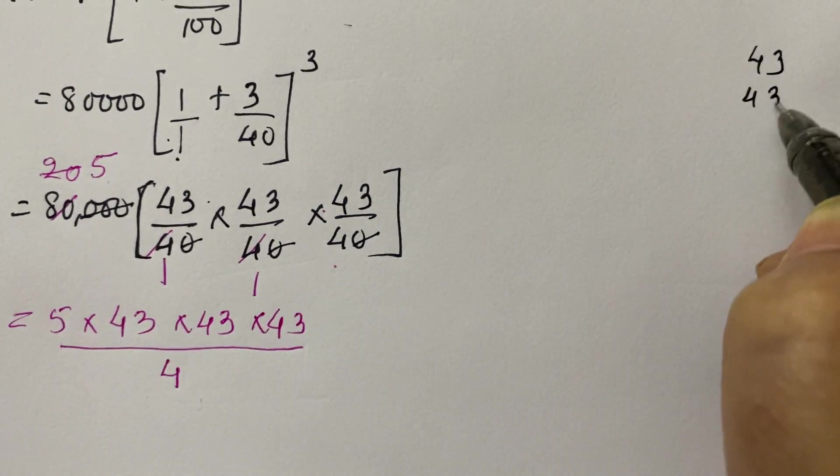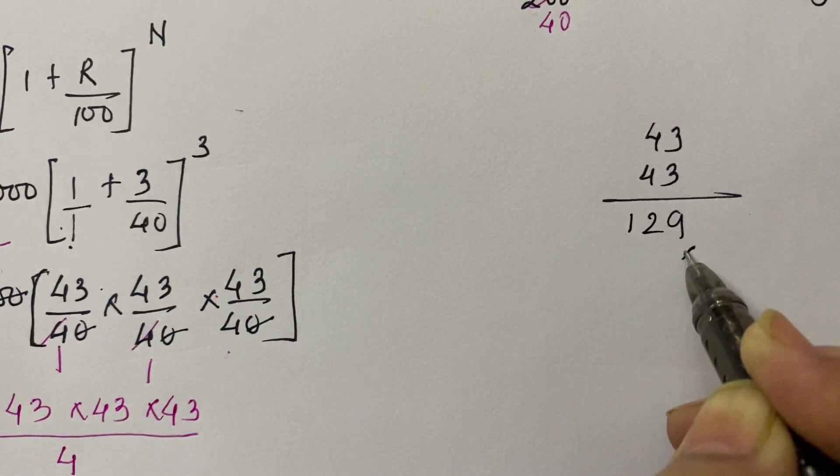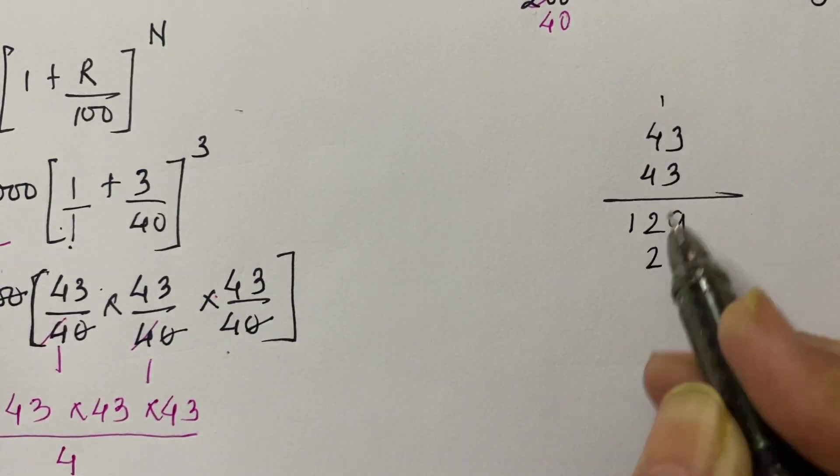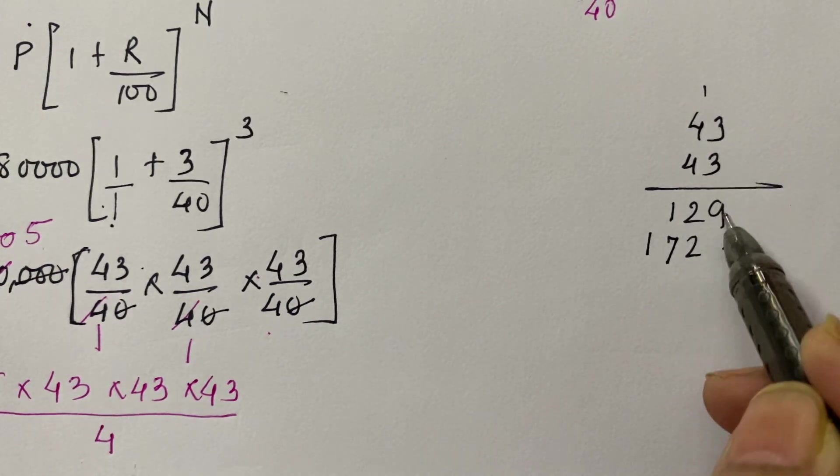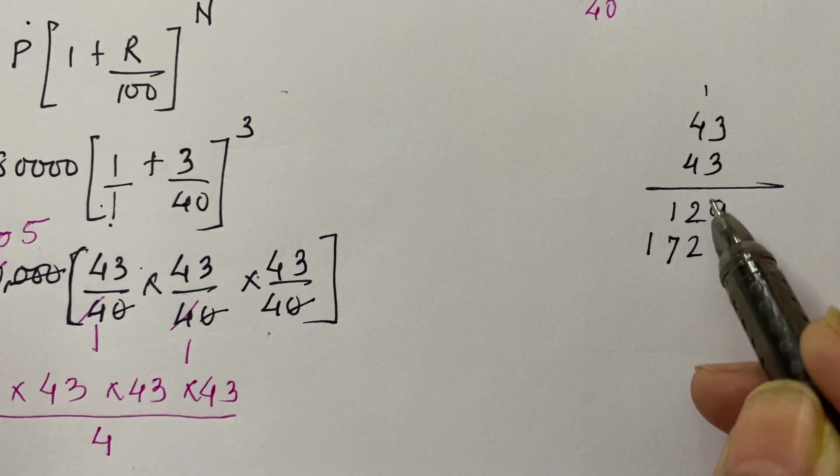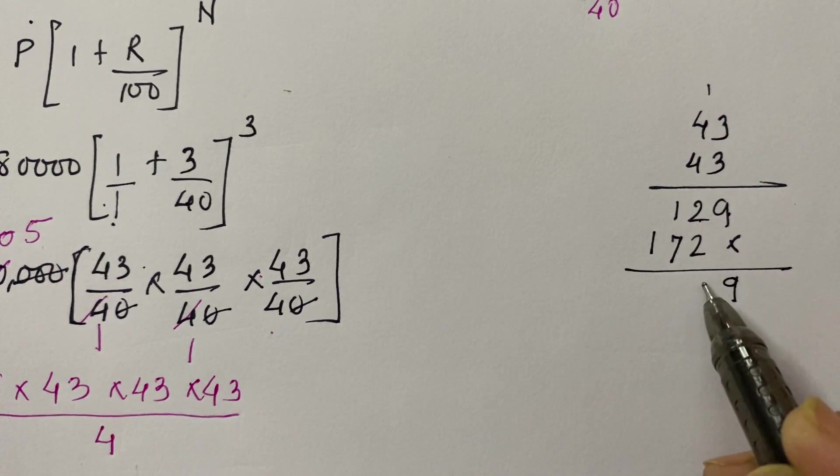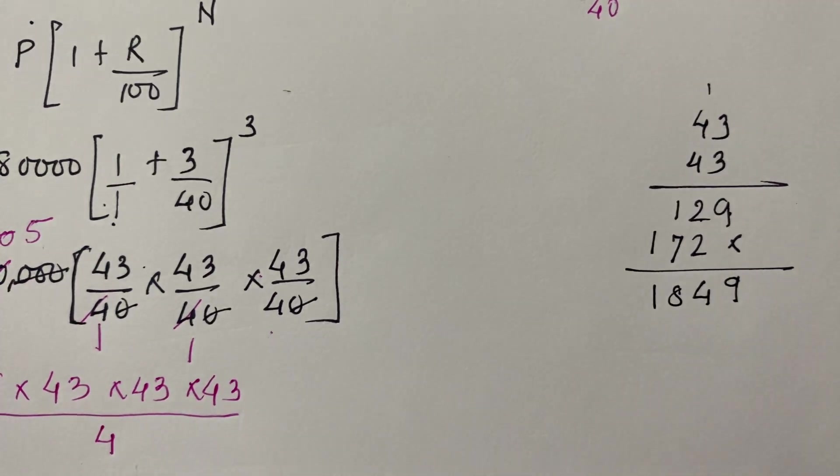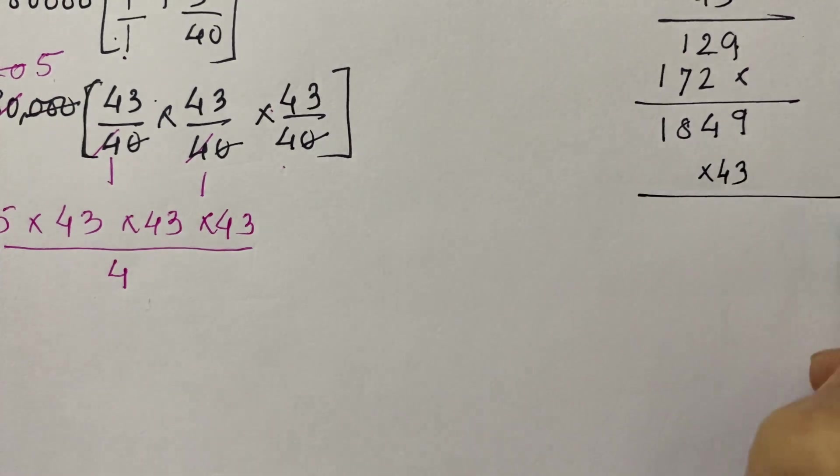So, let us see the multiplication now. First we will multiply these 43s. 43 into 43. 3 threes are 9, 3 fours are 12, 4 threes are 12, 4 fours are 16 and 1, 17. Check: 3 threes are 9, 3 fours are 12, 4 threes are 12, carry 1, 4 fours are 16 and 1, 17. So this becomes 9, 4, 8, 1.